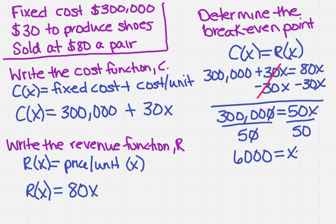So now I need to find out what is the Y value, or the R of X, or the C of X. I think it would be easier to find the R of X, so let's see. R of X would equal 80 times six thousand, so that's your Y value. Remember, 80 times six thousand is going to be four hundred eighty thousand.